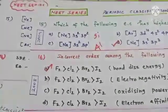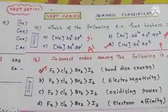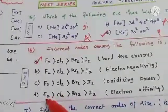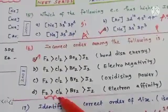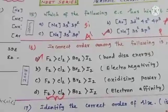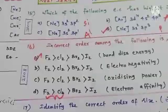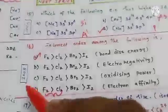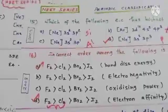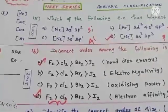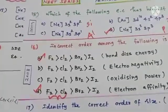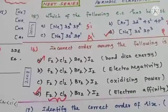Option D is the electron affinity order. Fluorine is expected to have greater electron affinity than chlorine, but actually fluorine has less electron affinity than chlorine — this is an anomalous pair. The correct order is Cl > F > Br > I. So both option A (bond dissociation energy) and option D (electron affinity) are incorrect orders.